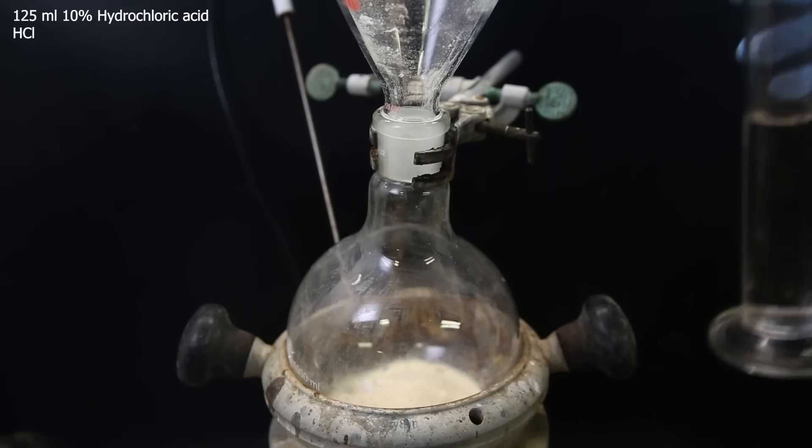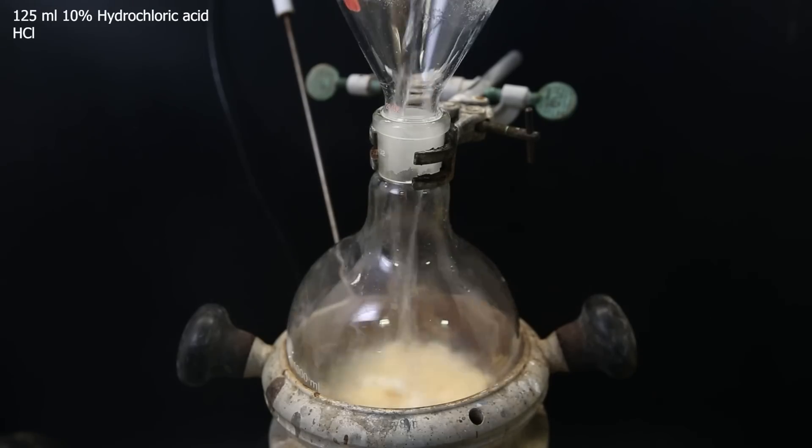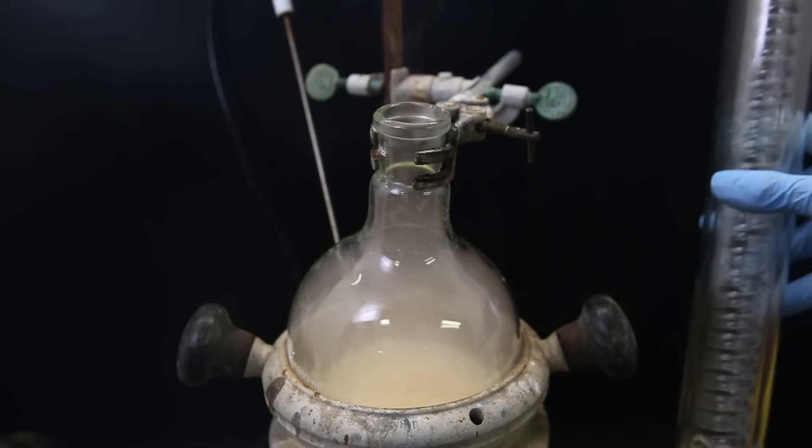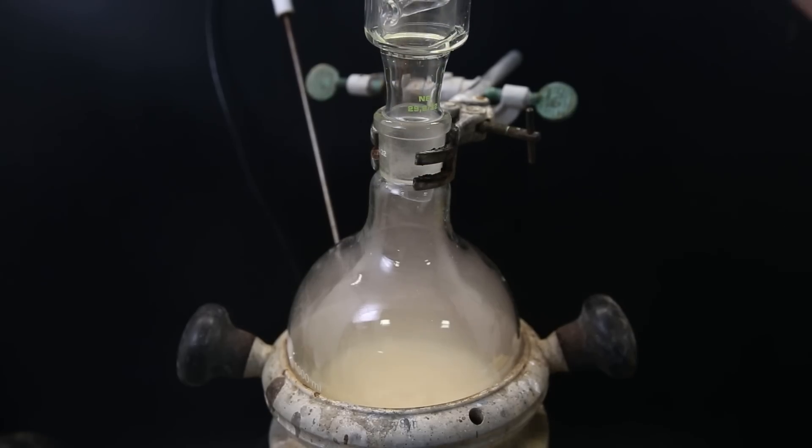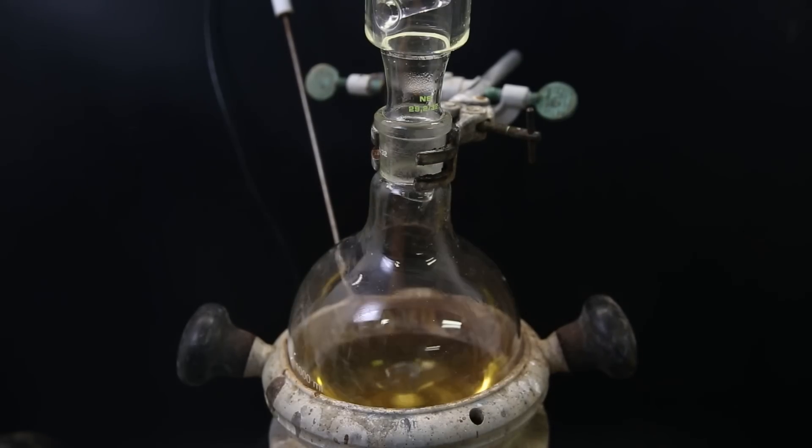Then add the solvent and the acid, 125 mils of 10% hydrochloric acid. I then attach a condenser and heat this mixture to a reflux for 5 hours.